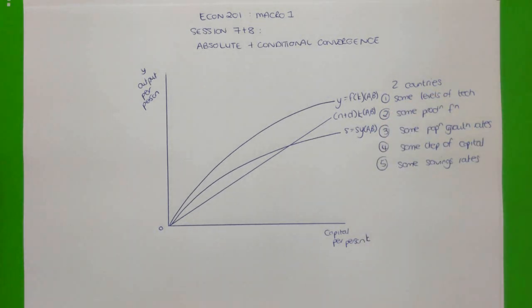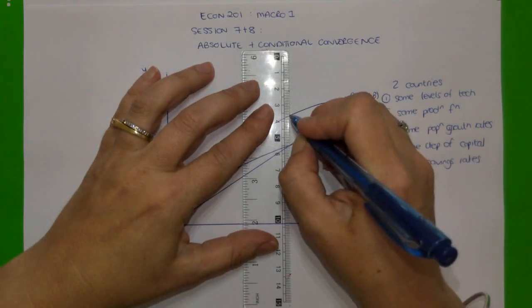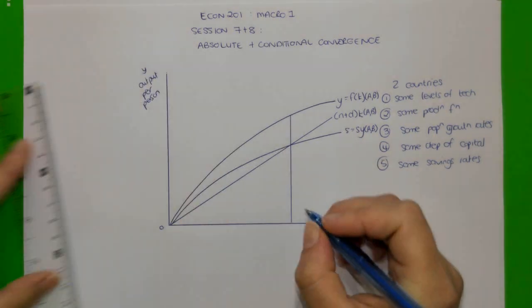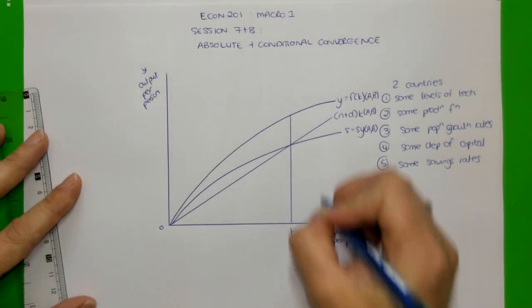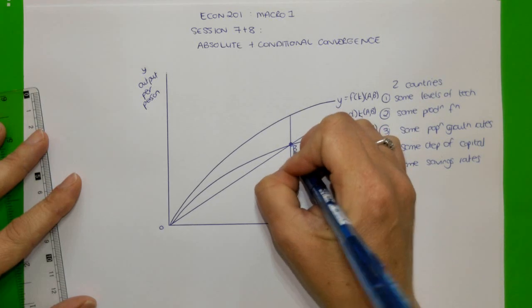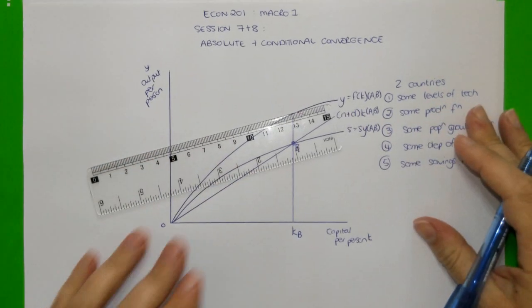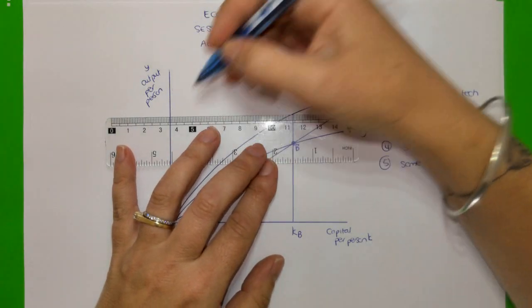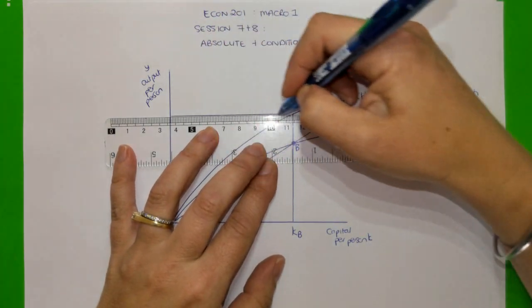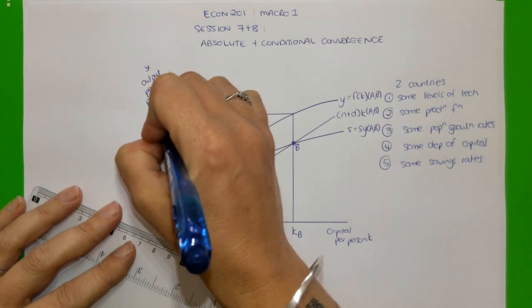We're going to assume that country B has actually reached the steady state. If country B has reached steady state, then we can refer to that equilibrium as the equilibrium for country B, and we can show the equilibrium level of output per person, which is Y_B.